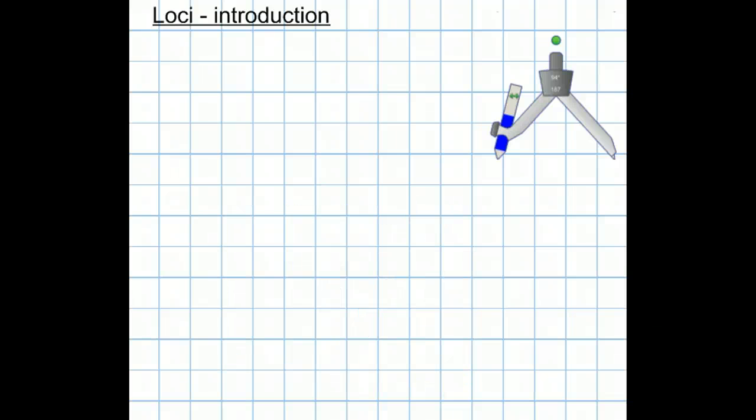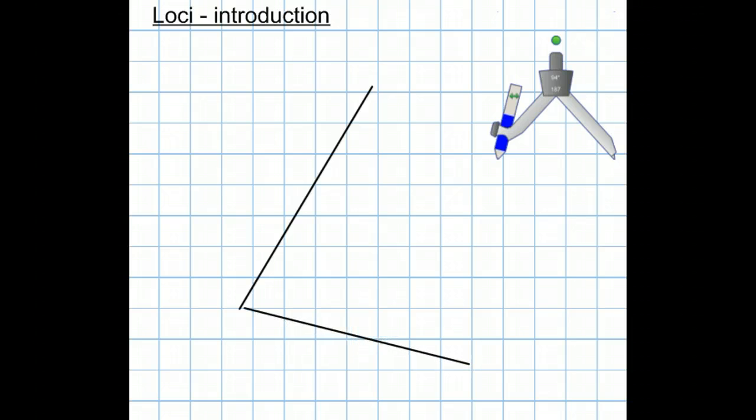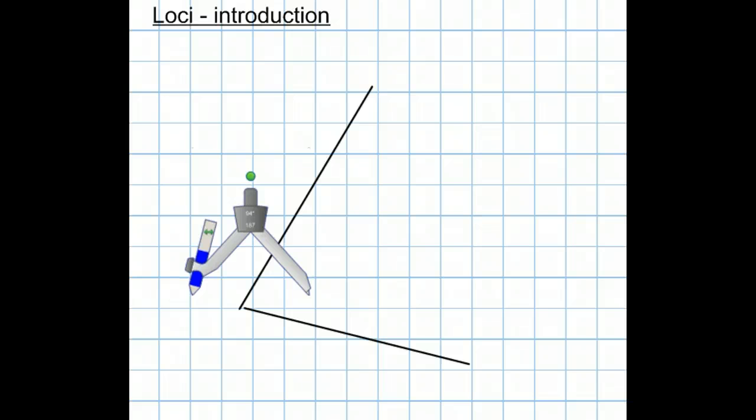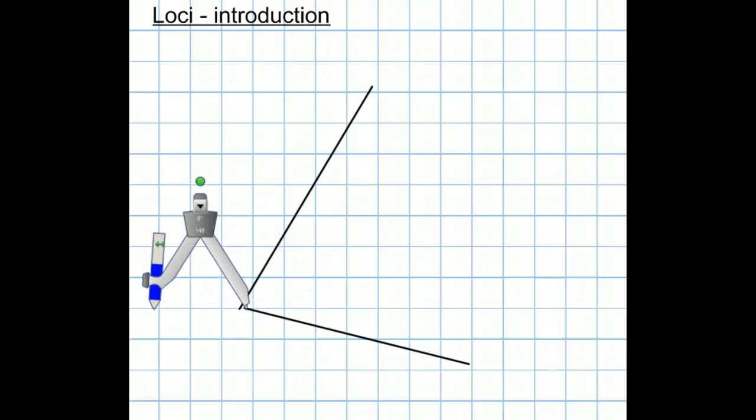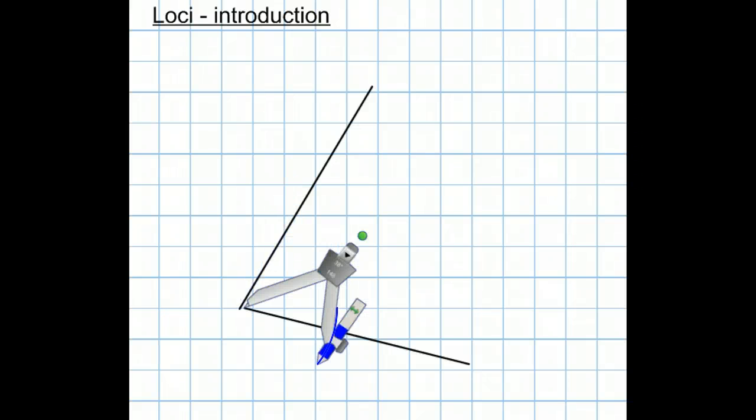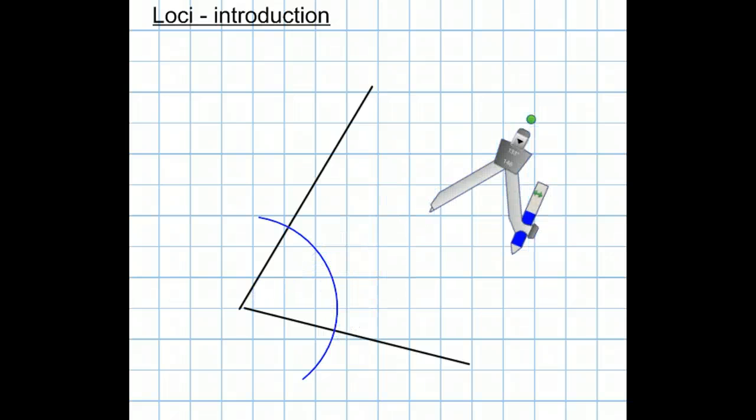There's another skill we need to do, which is how we bisect an angle. Let's have an angle here. What we do is we put... I'll just make that. It doesn't have to be so wide here. Put the compass on the angle and draw an arc. It crosses the two lines at two points. Here and here.